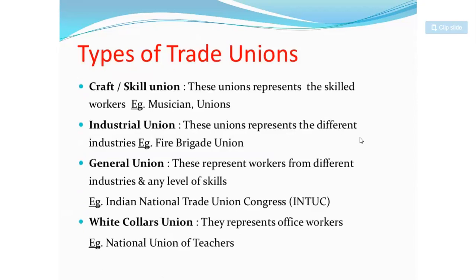Next are the types of trade unions. The first type is the craft and skill trade union. These unions represent skilled workers — those who have some artistic or craft-based work. For example, musicians or artists would form a craft and skill union.